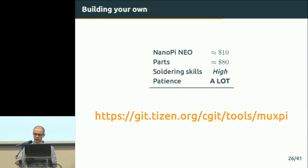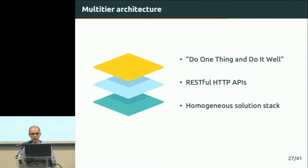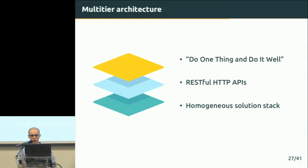We made a monolithic attempt at solving the problem at the hardware level, but this also requires software. This time we knew the architecture of the whole solution had to follow the Unix philosophy — divided into layers where each layer does one thing, one thing only, but does it properly. All layers in our software solution communicate through RESTful HTTP APIs, so they might be easily replaced as long as the interfaces are fulfilled. Currently we use the same technology for all layers in the stack, which is Go.